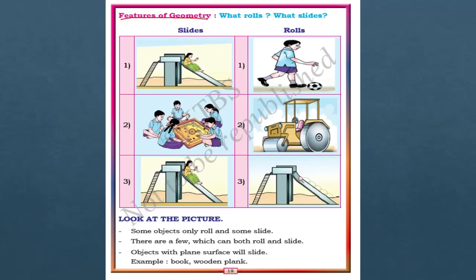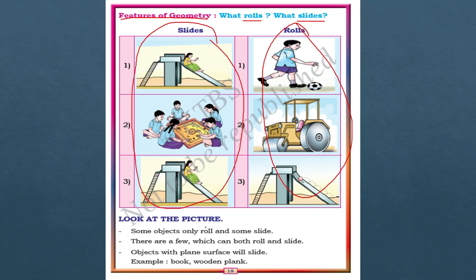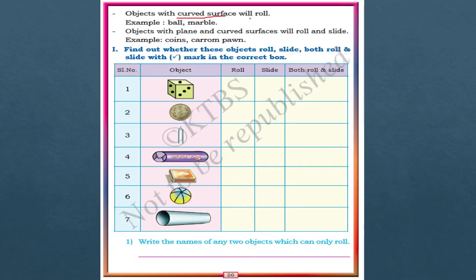Let us see these features of geometry — what rolls, what slides. On the left side you can see sliding, and on the right side you can see rolling. Some objects only roll, some only slide, but there are a few which can do both. Like a book or any wooden plank — their surface is plain, so they will slide. Objects with a plain surface will slide, and objects with a curved surface will roll — for example, a ball or marble.